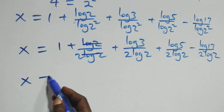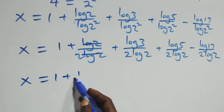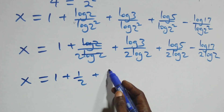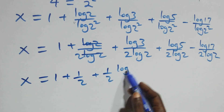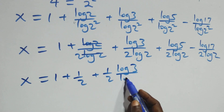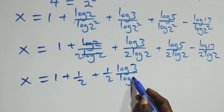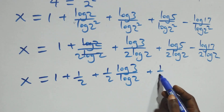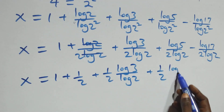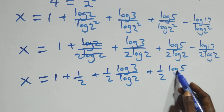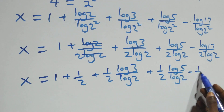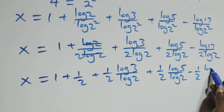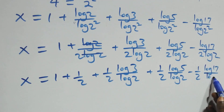Here log 2 cancels with log 2, leaving 1 over 2. So x equals 1 plus 1/2, plus 1/2 × log 3 over log 2, plus 1/2 × log 5 over log 2, minus 1/2 × log 17 over log 2.